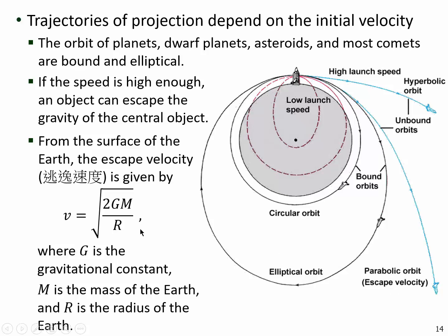Finally, if you throw something from Earth with a large enough velocity — about 11 point something kilometers per second — it will leave Earth's gravity with a parabolic orbit. That critical velocity is what we call escape velocity, given by this equation. Using kinetic energy and potential energy, you set the total mechanical energy to zero, meaning the object can just reach infinity with no more energy. If the velocity is even larger, that object will leave the Earth in a hyperbolic orbit.